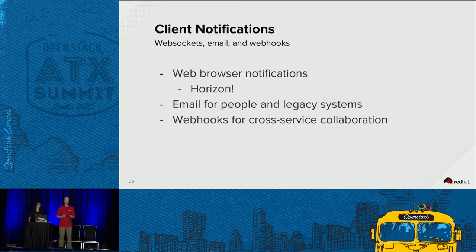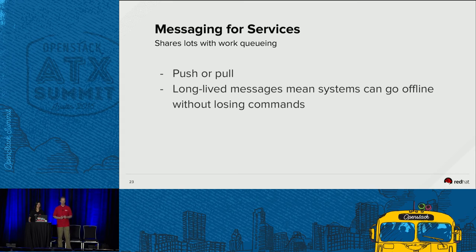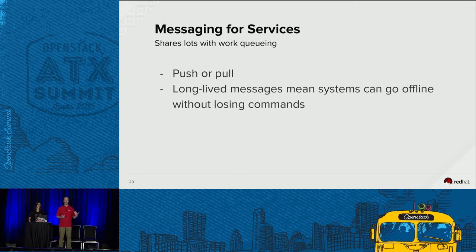For long-running jobs where you'll leave your computer, email notifications might be what you need — you can get them on your phone anywhere. For legacy systems that don't have many options for getting data in, email might be one ingest mechanism. For more modern services with webhook support, Zakhar supports webhooks and can call out to any other service — whether that's a service outside of OpenStack or your CI system. Inside of OpenStack, many services cooperate — Heat is a great example because it cooperates with just about every OpenStack service. Right now Heat has to poll every OpenStack service, and if those services used Zakhar as a notification bus, it would reduce the work Heat has to do and the load on those services.